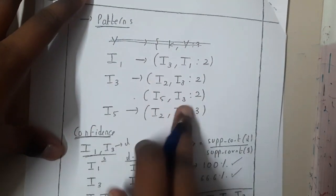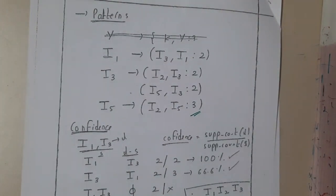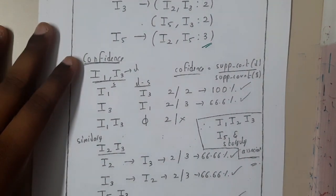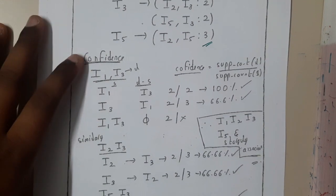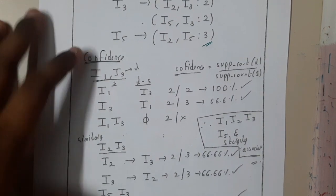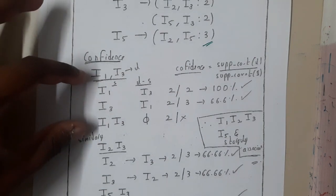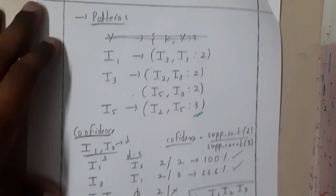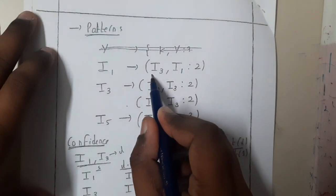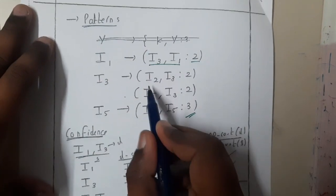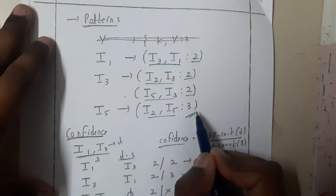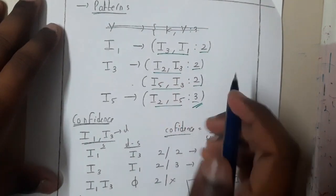Everything up to this point is the same as before. Now the small changes will start — we consider the confidence values. For confidence, you take the values of the maximum itemset selected. The occurrences are: i3 and i1 is 2, i2 and i3 is 2, i2 and i5 is 3.